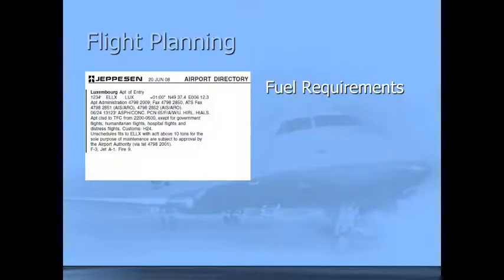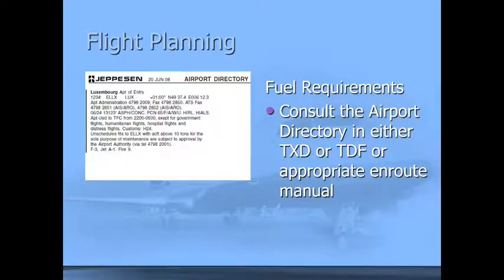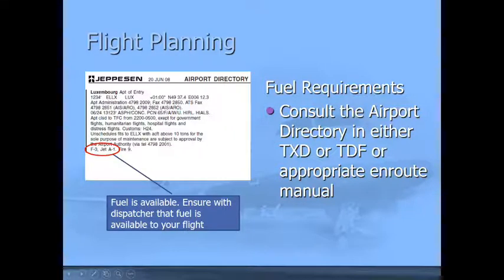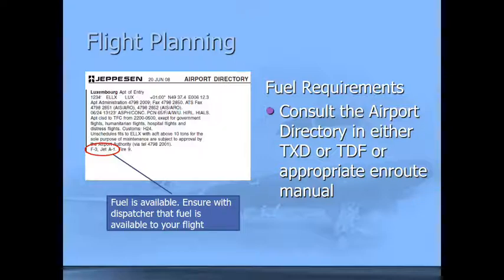Another thing to look at in this airport directory — we're still looking at Luxembourg — is the fuel requirements. We need to make sure that fuel is actually available at this airport. This one tells us that Jet A1 is available. The dispatcher is still responsible to make sure it's actually available to your flight and that fueling arrangements have been made. For international flights, it's not always as simple as just using a credit card or billing for fuel — this has to be set up in advance, often by the dispatcher or by flight planning services.